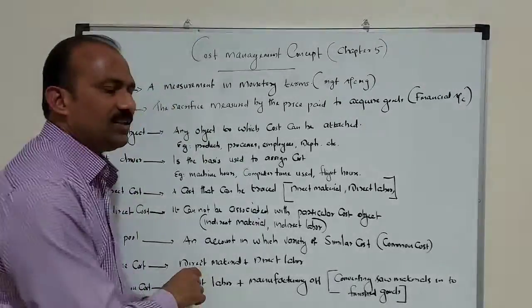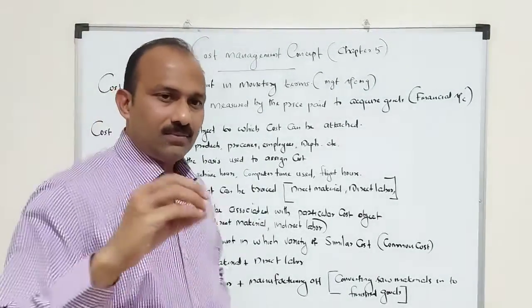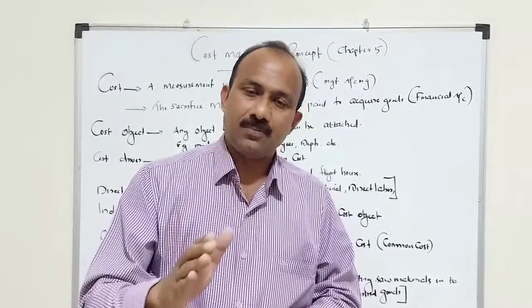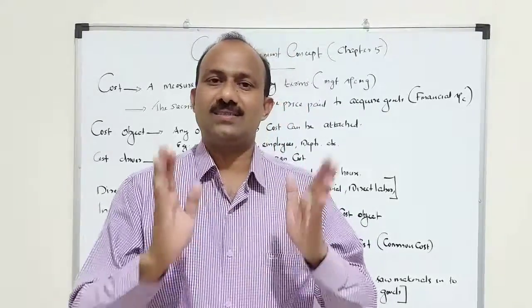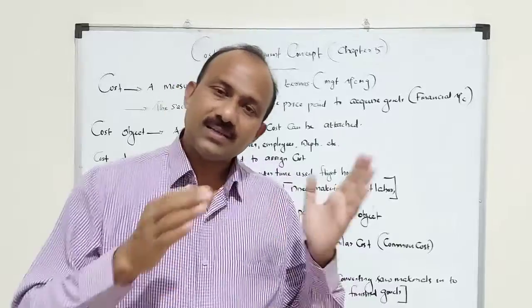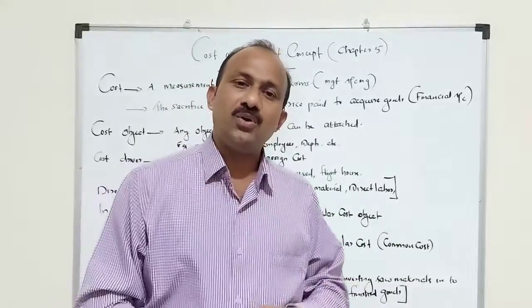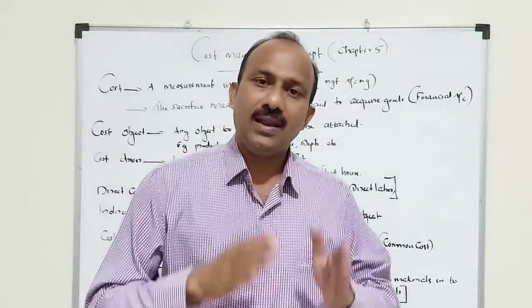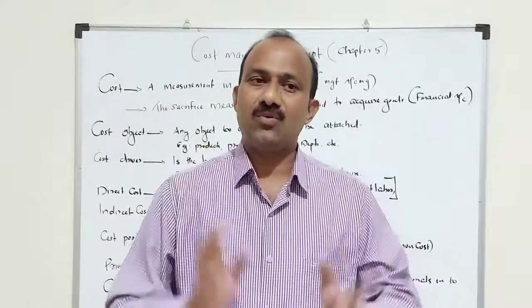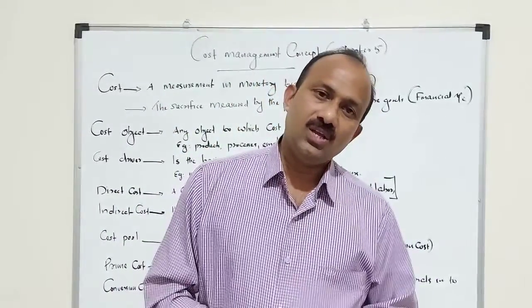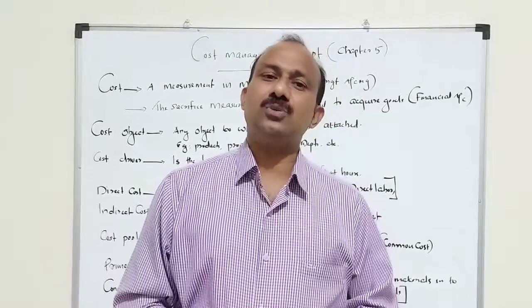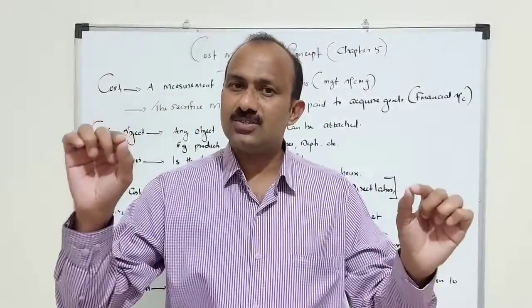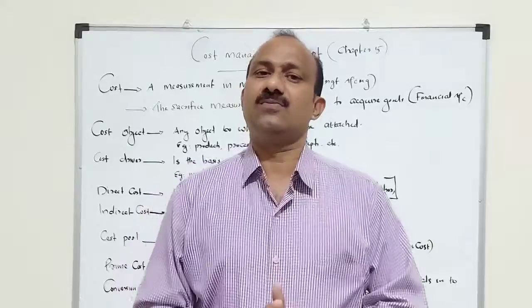Prime cost is otherwise known as basic cost. Direct material plus direct labor is known as the prime cost of the product. Conversion cost means direct labor plus manufacturing overhead. Therefore, conversion cost means converting raw materials into finished products.